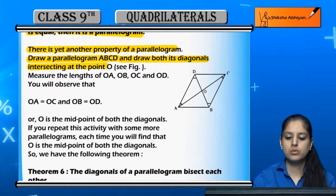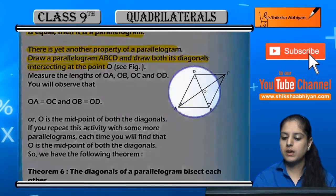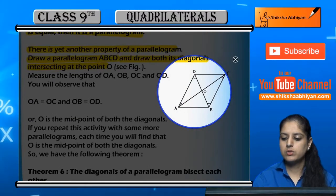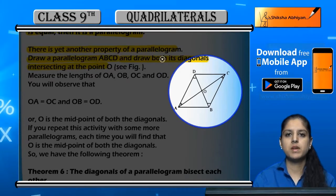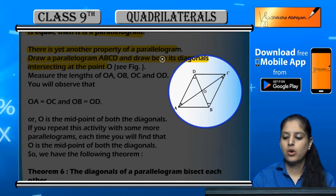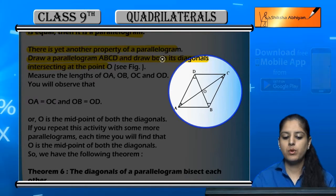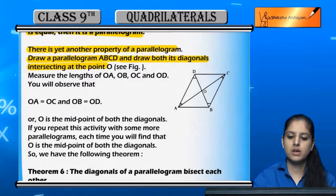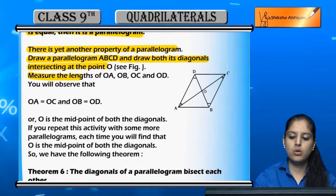Aur wo aapas mein intersect kar rahe hain point O par, theek hai. Ab agar humne OA, OB, OC aur OD inki lengths ko measure kiya.